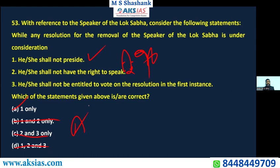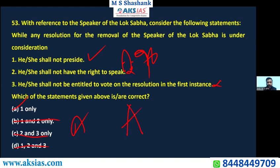The third statement says the Speaker shall not be entitled to vote. But Article 96 clearly says they are entitled to vote when the removal procedure is underway. Normally speaking they cannot vote, but during removal proceedings they can. So that statement is also wrong. A is the answer for this question.